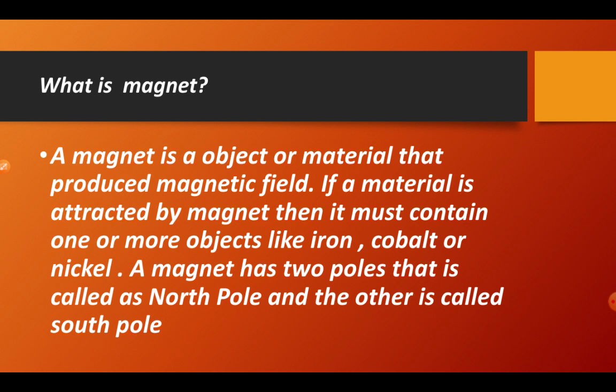What is a magnet? In simple language, a magnet is a material that can attract metals, that is iron, cobalt, or nickel. A magnet is an object or a material that produces a magnetic field. Magnetic field means the particular region up to which a magnet shows its presence or its magnetism — that is, its power to attract objects like iron, nickel, and cobalt.